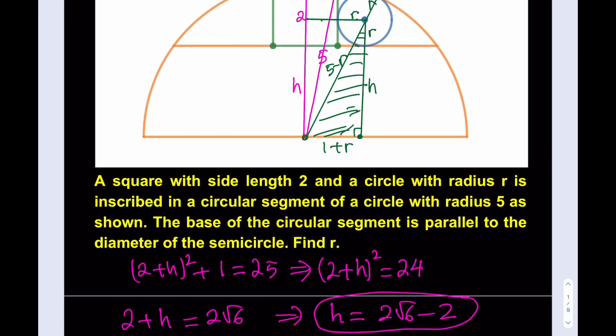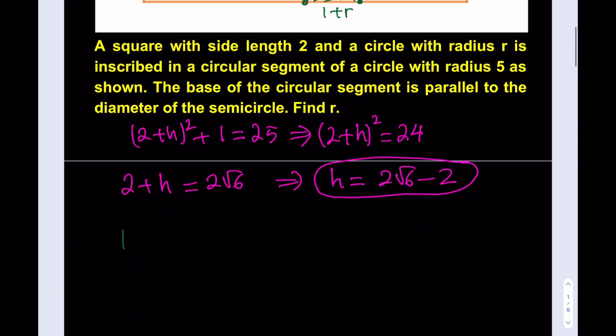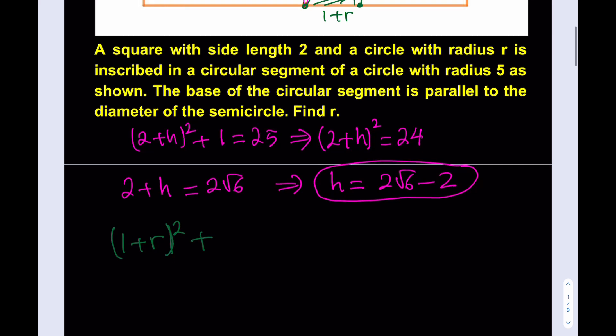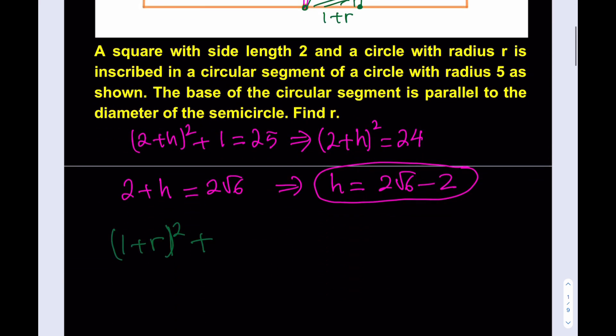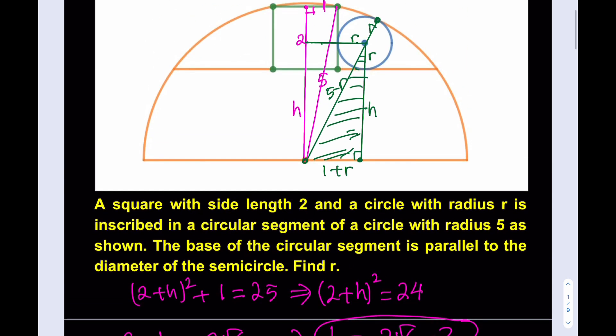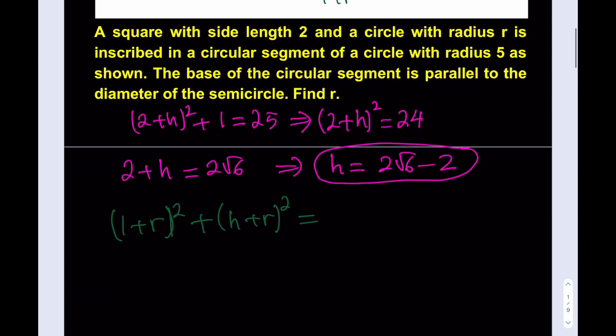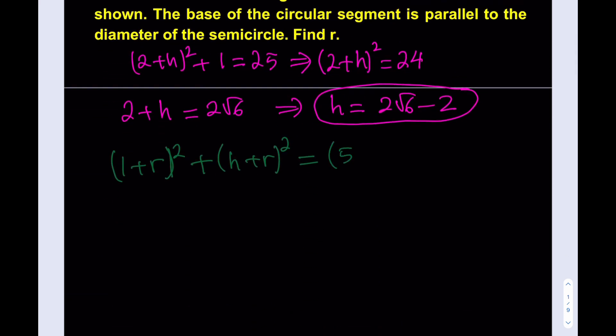Now I have everything I need. I can go ahead and write down my equation. And what is my equation going to look like? I'm going to be adding the squares of the legs and that's going to equal the square of the hypotenuse. Okay, so what I have here is (1+r)² + (h+r)² = (5-r)². Don't forget the h and the r equals the hypotenuse. The hypotenuse as you know is 5 - r because we had to take out the radius from there, so that's going to be (5-r)². Beautiful.